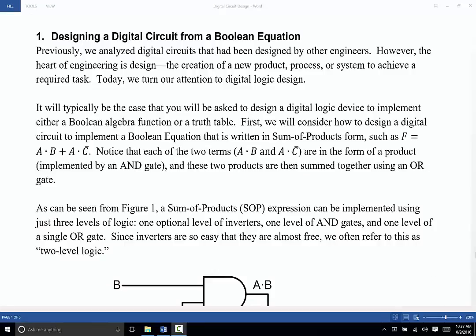And there are a couple of ways that we can specify the requirements for our digital circuits. We can either give a Boolean equation, or we can give a truth table. And it turns out that Boolean equation and truth table are really interchangeable with each other. We're going to talk first about how to design from a Boolean equation, and then second, we'll talk about how to design from a truth table.